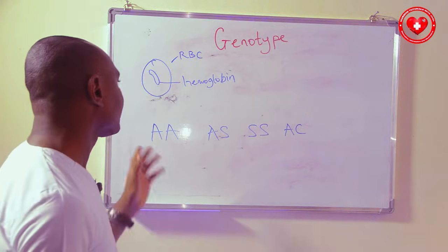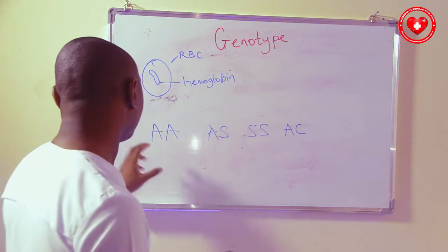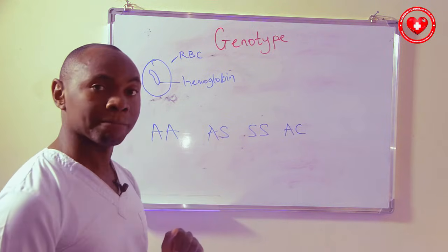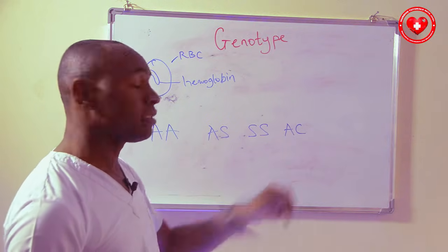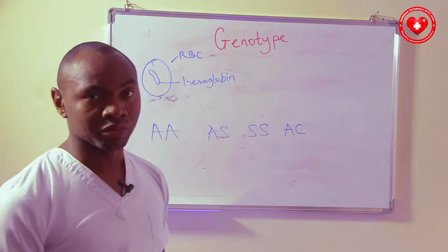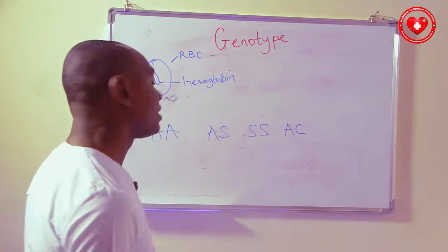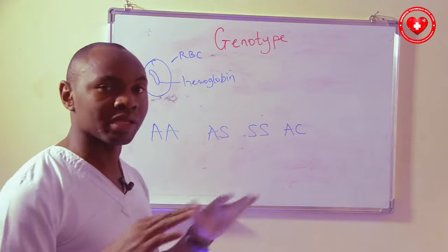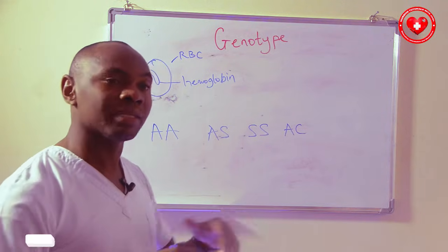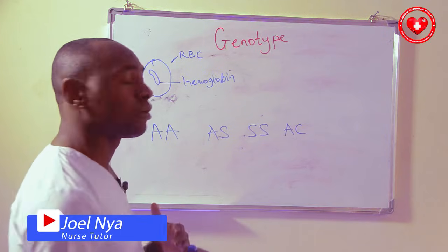There is a system that helps us know what genotype you have. We have AA, which is the first group; AS is the second group; then SS; and AC. Some people also see SC, though the ones with C are very uncommon. The AA group shows that these individuals do not have sickle cell traits — they are not carriers and can get married to anybody.